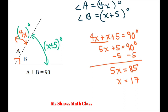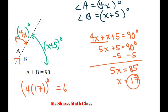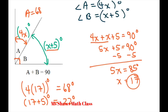Now plug in 17 into A and B. A equals 4 times 17 degrees, which equals 68 degrees. B equals 17 plus 5 degrees, which equals 22 degrees. So angle A equals 68 and angle B equals 22, and you can add them up: 68 plus 22 equals 90 degrees.